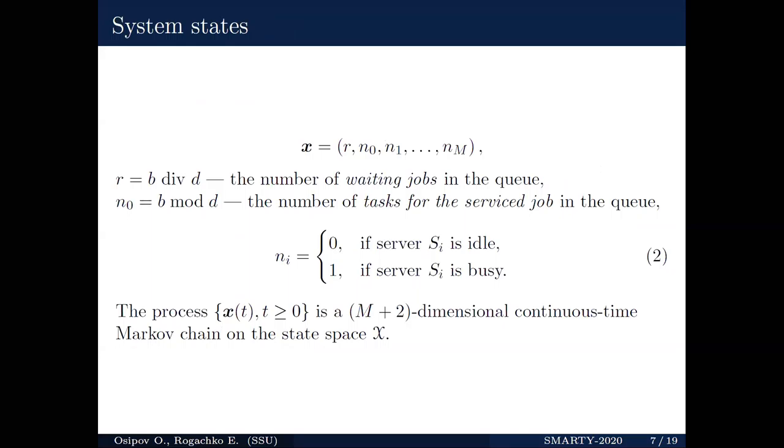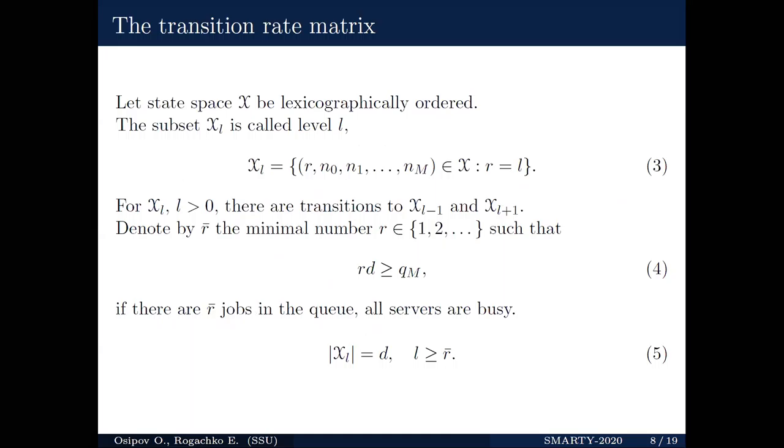Let's now consider the states of the system and define the state as the following vector. The first element denotes the number of jobs in the queue. The second one is the number of tasks for the serviced job in the queue. Other elements define the states of servers, as you can see in expression two. Thus, we have a continuous time Markov chain. We can divide all states into levels. The level is a set of states defined by the following expression. As you can see, all states within a level contain the same number of jobs in the queue.